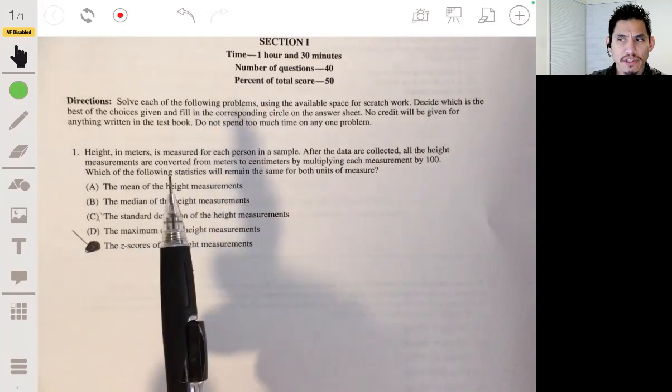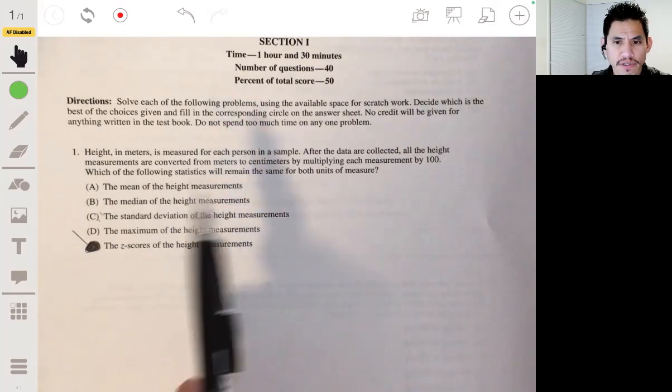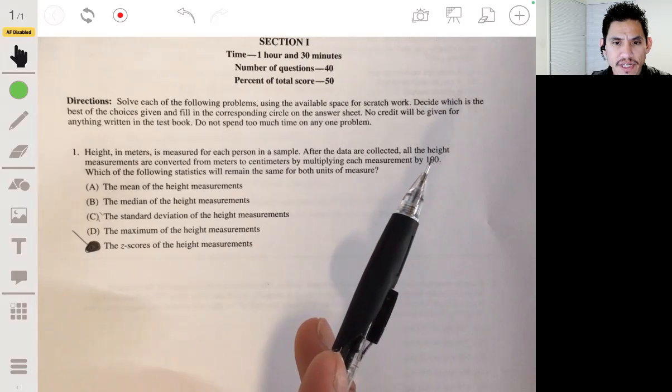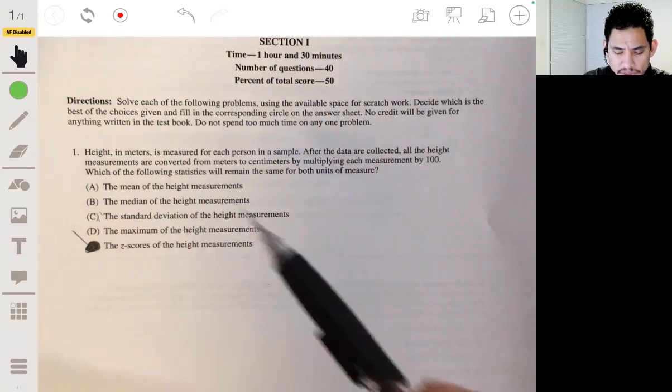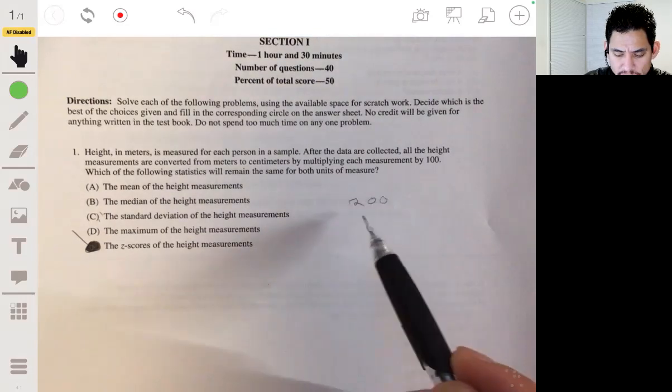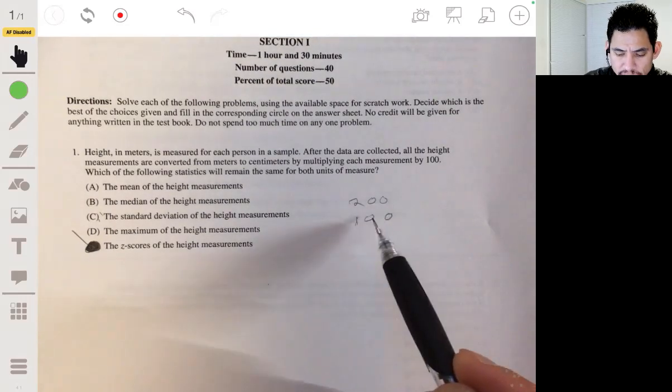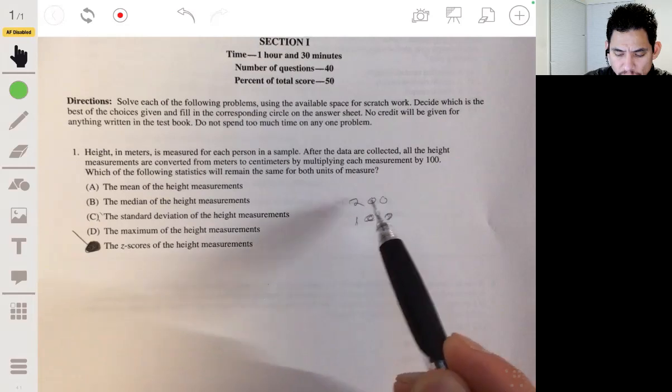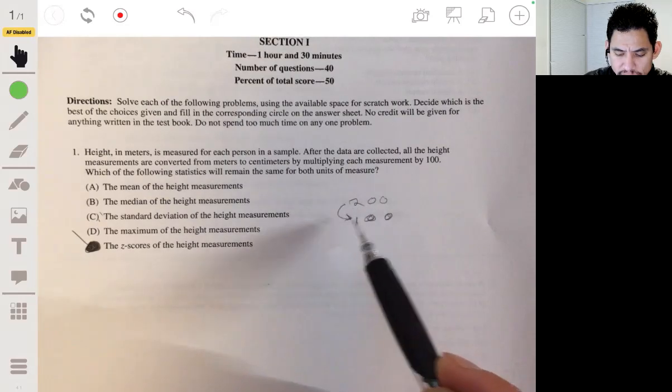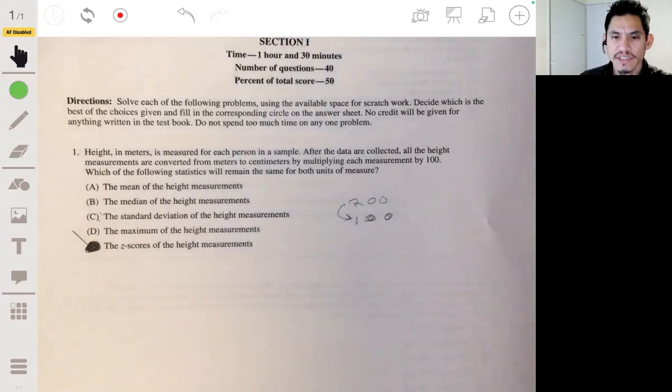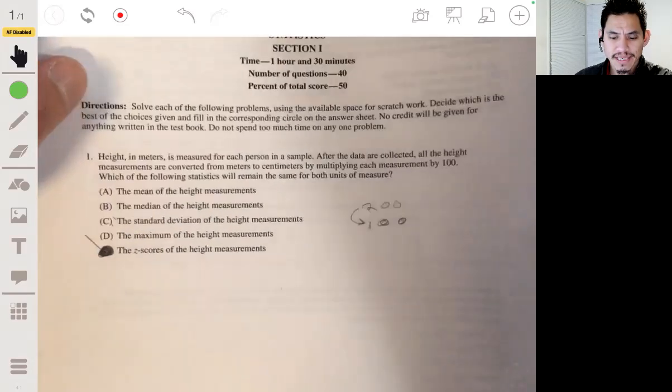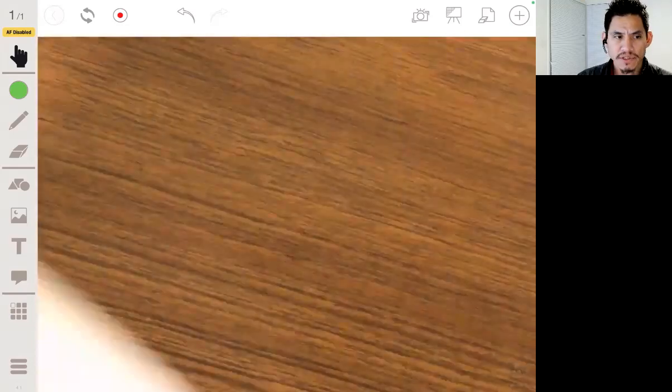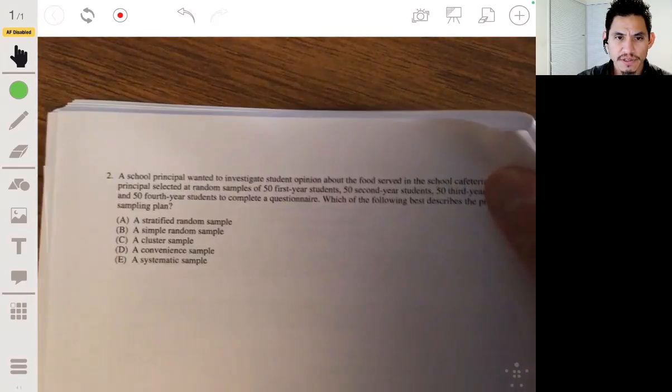So the tallest person is twice the shortest person, but if you change it to centimeters, the tallest person would be 200 and the smallest person would be 100 centimeters. So their spread is still different, but their relationship is still the same because the tallest person is still twice the smallest person. Keep this in mind as you're going through this exam because that's going to be something I'm sure they're going to try to assess you with some tricky problems.